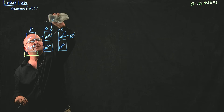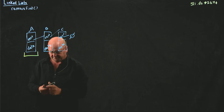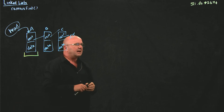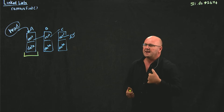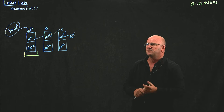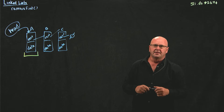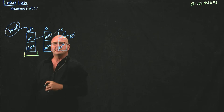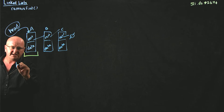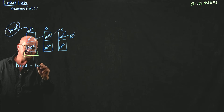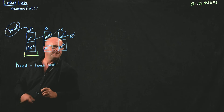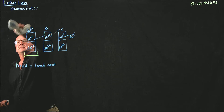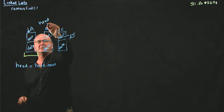Let's go back to our original situation where we've got head pointing to A. How do we know what the node after head is? head.next. So head.next points to B. The way that we delete the first node is all we have to do is set head equal to head.next. If we do that, it moves head over and now head points to B.